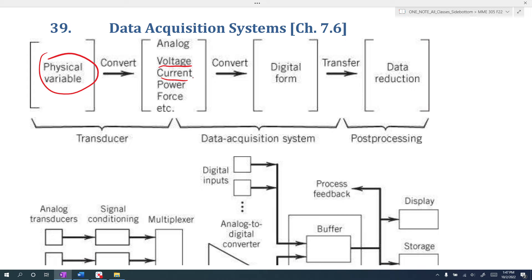That voltage or current signal, we need to convert it into its digital form, and that is the job of our data acquisition system. So that's a data acquisition board, and that data acquisition board then takes that data and transfers it to a computer, typically, where it is stored and processed.